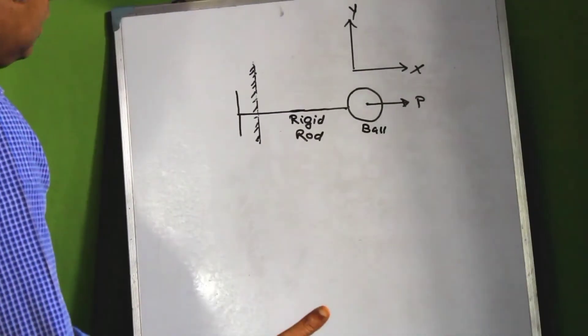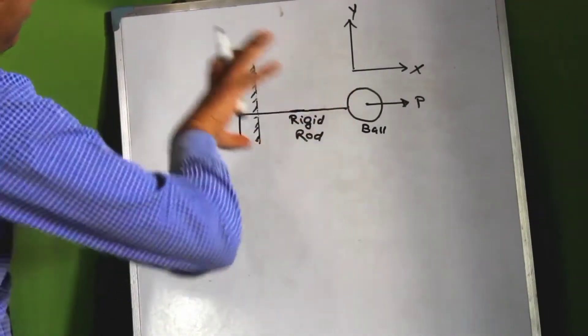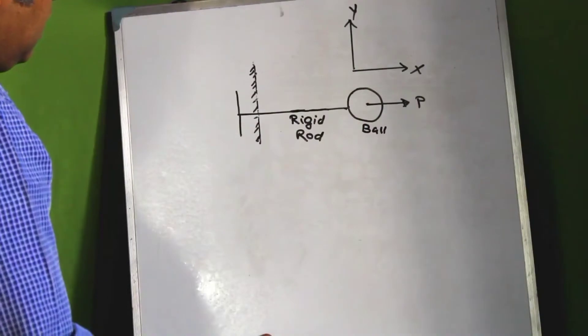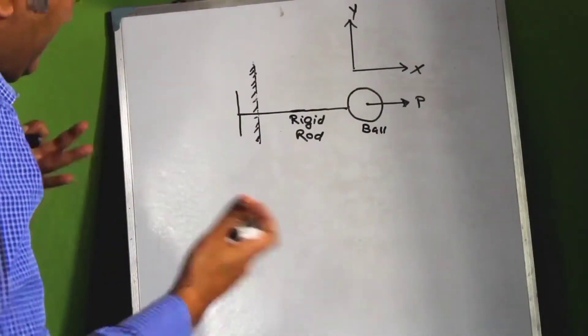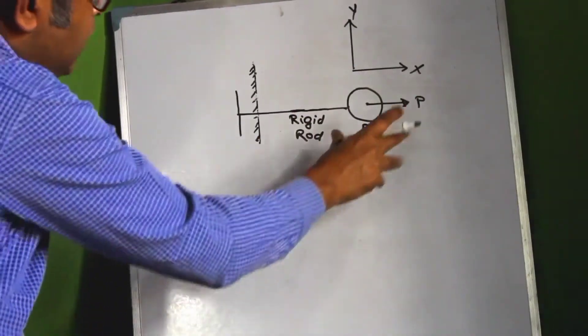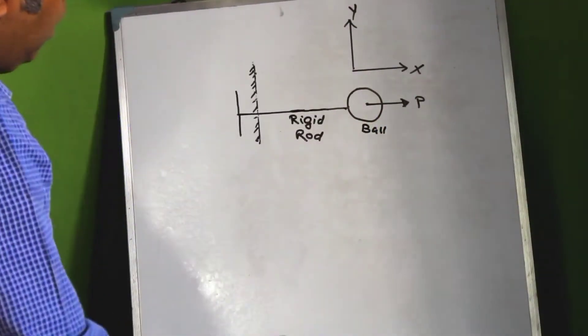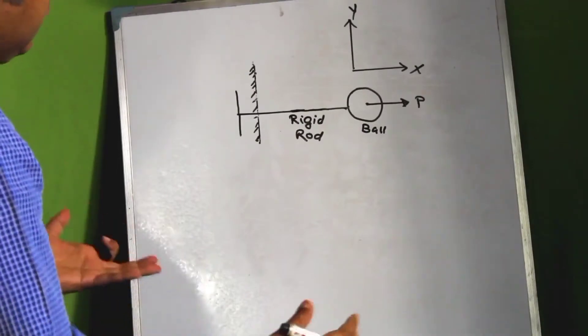But as we have understood from the last videos, this ball, if a force is applied, will not move only if the net force acting on this ball is zero. So how is the net force acting on this ball zero? Well let us find out.